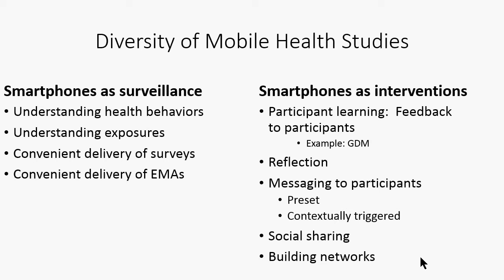Much of the motivation for smartphones in surveillance is understanding health behaviors and exposures. The phones are used for convenient delivery of surveys rather than paper instruments — delivered on device, in situ, wherever participants are. This has a lot of attractions for reaching marginalized groups, homeless people, or younger people who might not respond to random digit dialing or have a landline. It can also involve convenient delivery of ecological momentary assessments at random or context-triggered times — very important motivations for using smartphones for surveillance.